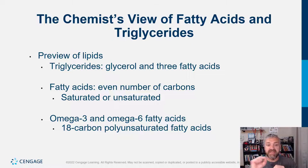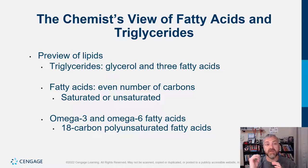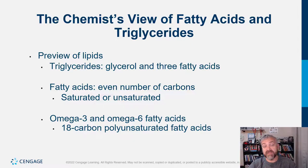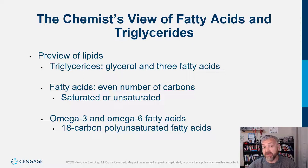Fatty acid tails are always even numbers of carbons — they can be saturated or unsaturated. Some are short chain fats with maybe six carbons, some are medium chain fats around ten carbons, and long chain fats are typically around sixteen to eighteen carbons. They're always even numbers because fatty acids are broken down for fuel in a process called beta oxidation, where carbons are cut off two at a time, becoming something called acetyl-CoA.